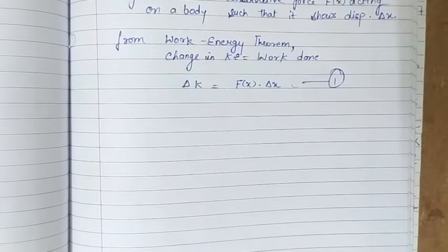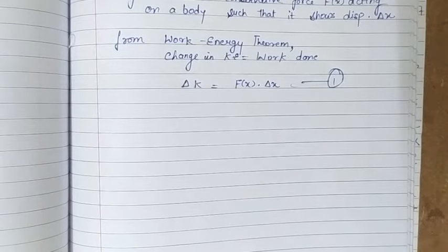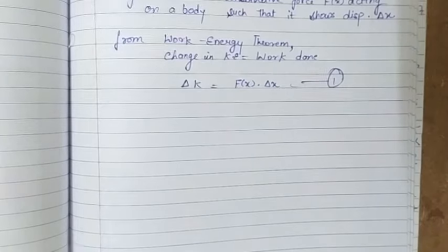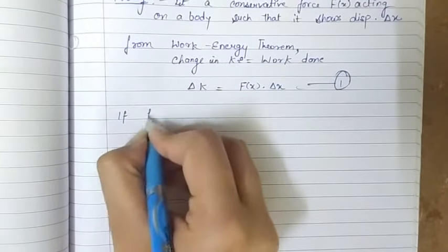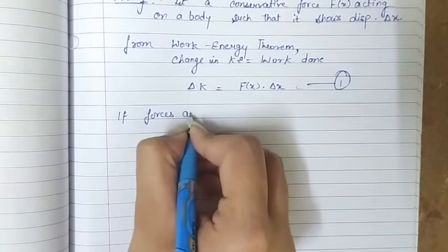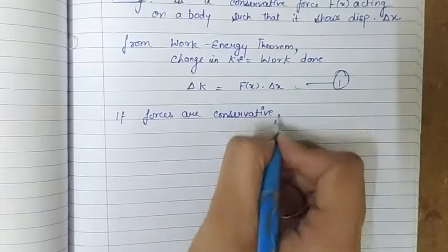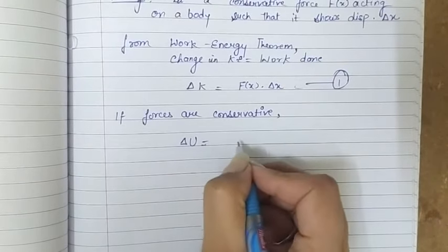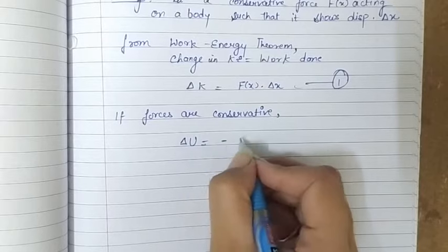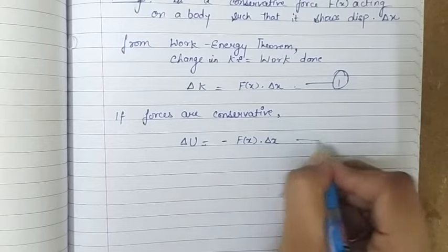Since the force is conservative, we can use the relation between potential energy and conservative forces. If the forces are conservative, we can write the change in potential energy delta U as the negative of the work done by that force: delta U equals negative of Fx times delta x. Let this be equation number two.